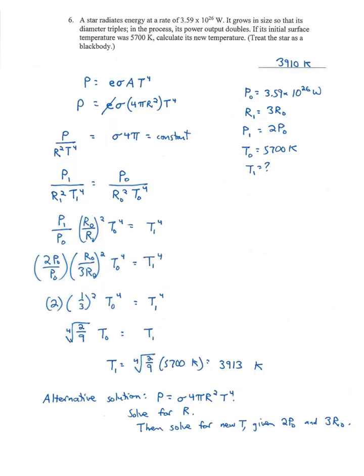Number six: We have a star radiating. It's going to change in size and power output. We're given the initial temperature and want to calculate the new temperature. Black body means it's a perfect radiator, so emissivity equals one. We're going to use this equation: Power is emissivity times sigma, the Stefan-Boltzmann constant, times the area.